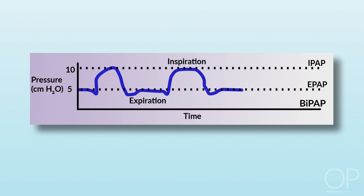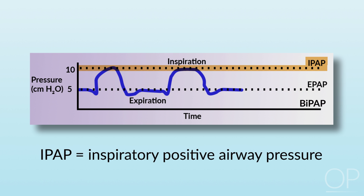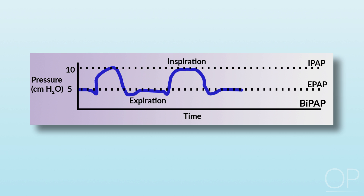The third graph shows a patient on BiPAP, where just like CPAP, there's a continuous positive airway pressure on the bottom, known as EPAP, or expiratory positive airway pressure, as well as an inspiratory positive airway pressure given to the patient when they draw a breath. It's an assisted breathing pattern, and pressures cycle between the expiratory positive airway pressure and the peak inspiratory positive airway pressure.